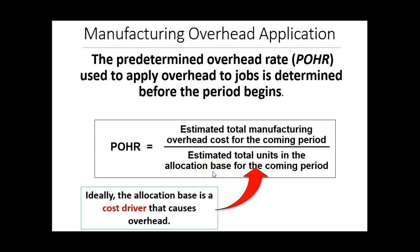The allocation base may be machine hours, direct labor hours, or direct labor costs. So we might ask: what is the total number of machine hours we expect to use in a given year? Based upon the total manufacturing overhead cost and the estimated total allocation base, we determine a predetermined overhead rate — for example, for each machine hour used, we assign overhead costs of X dollars.